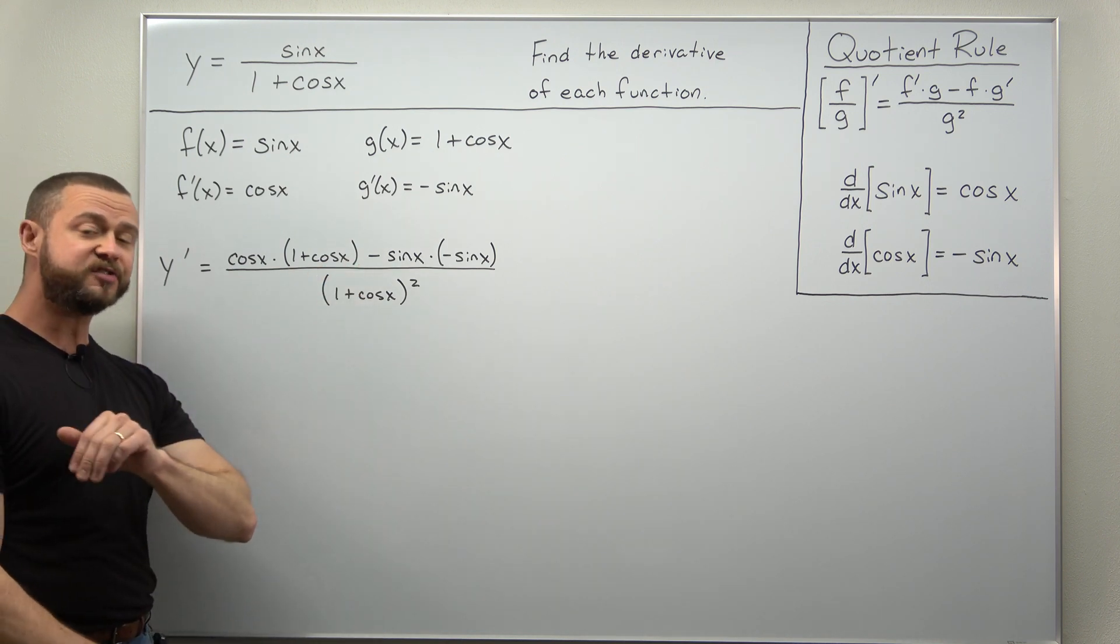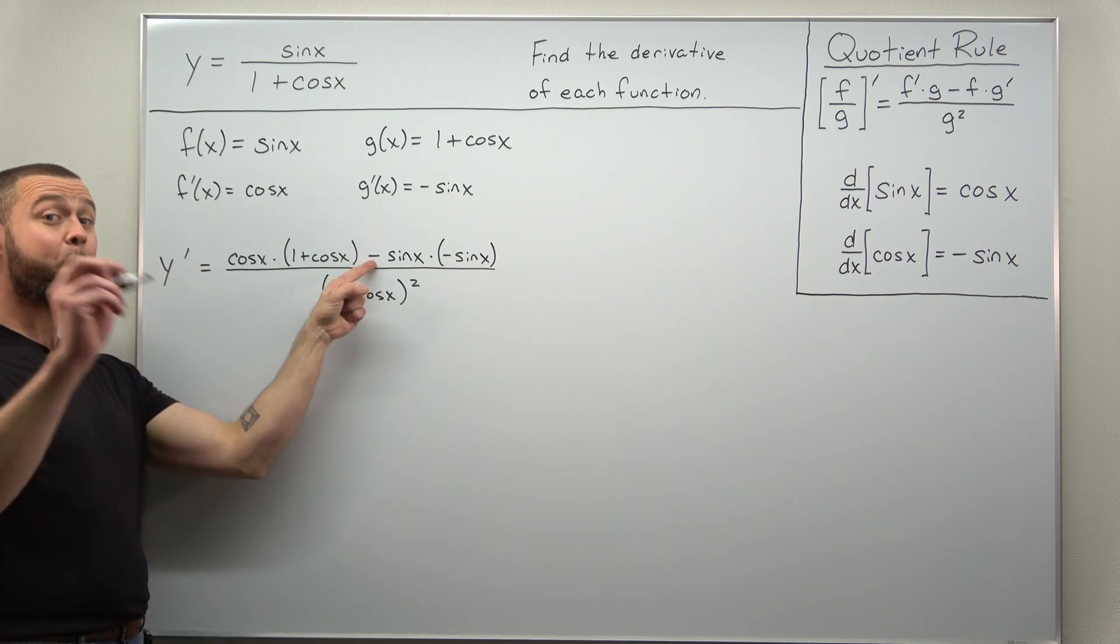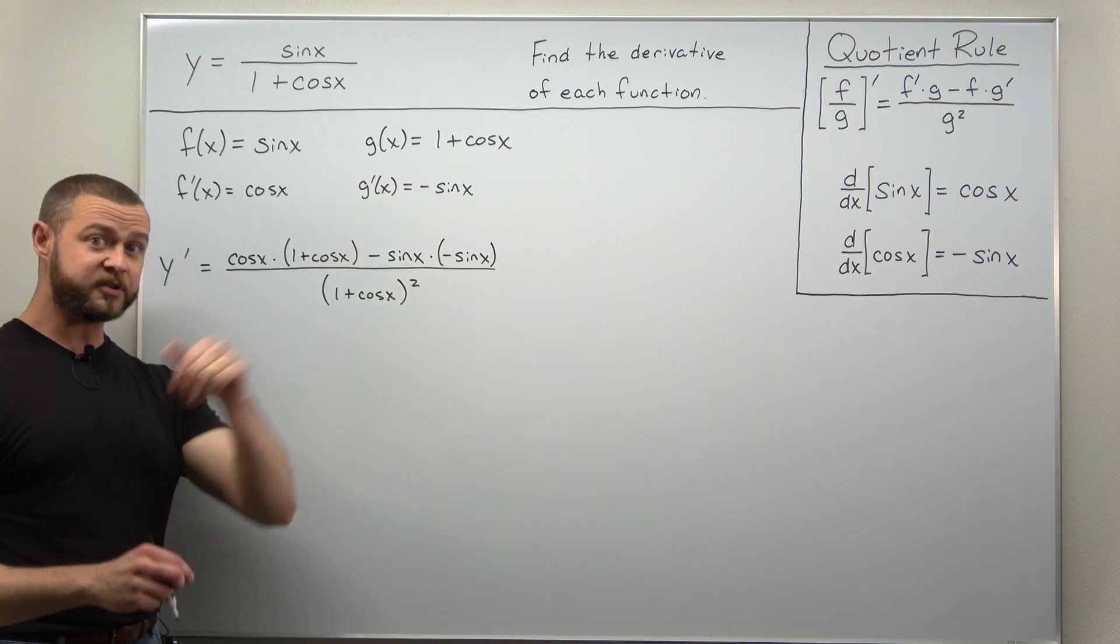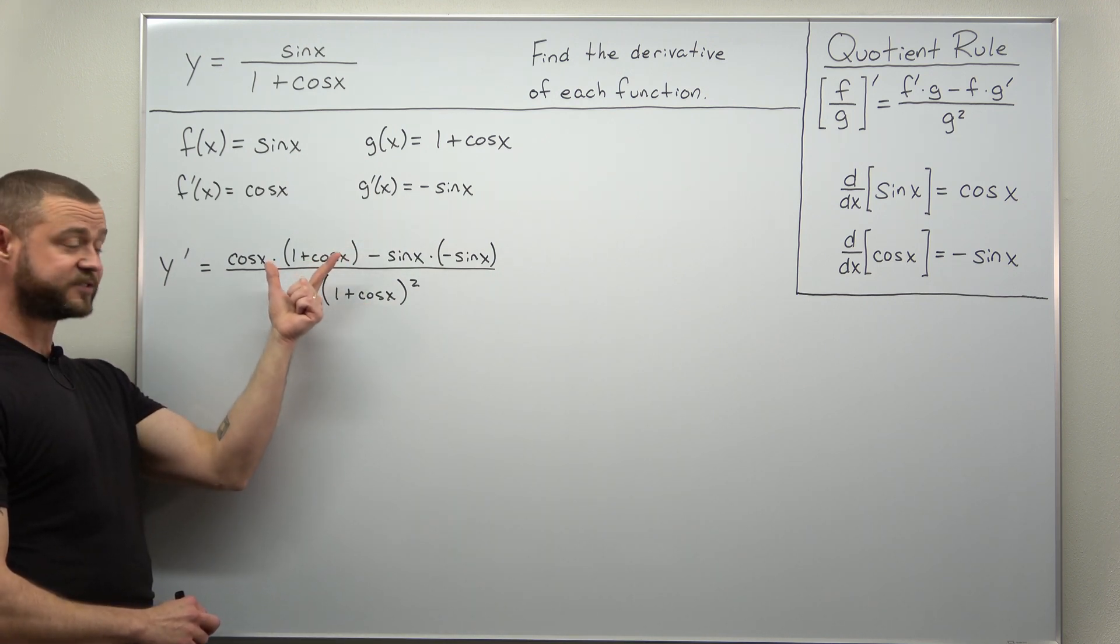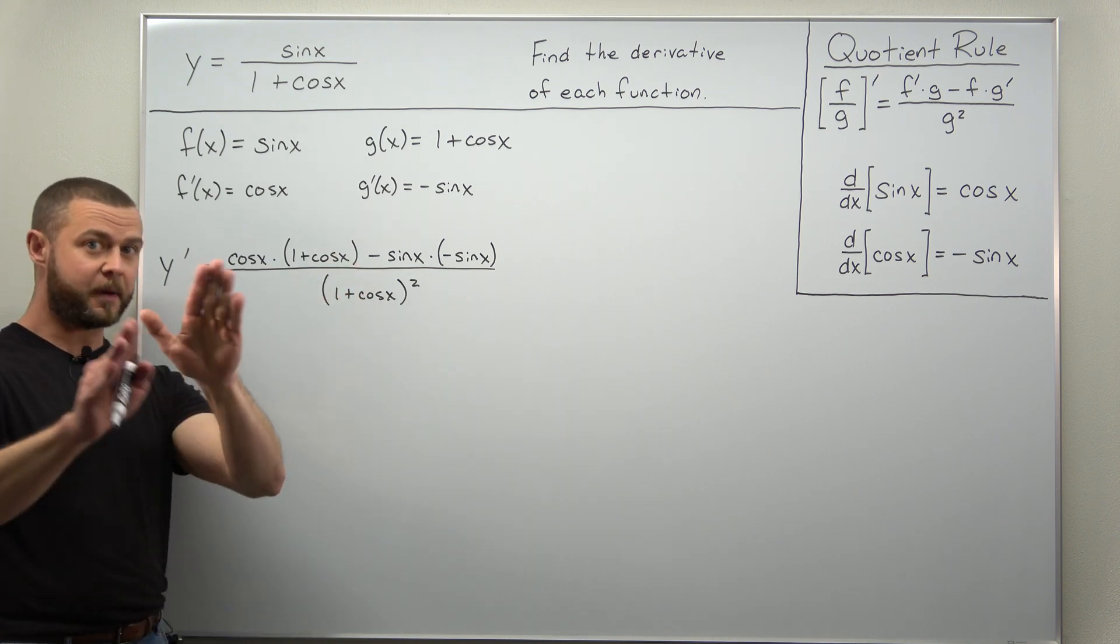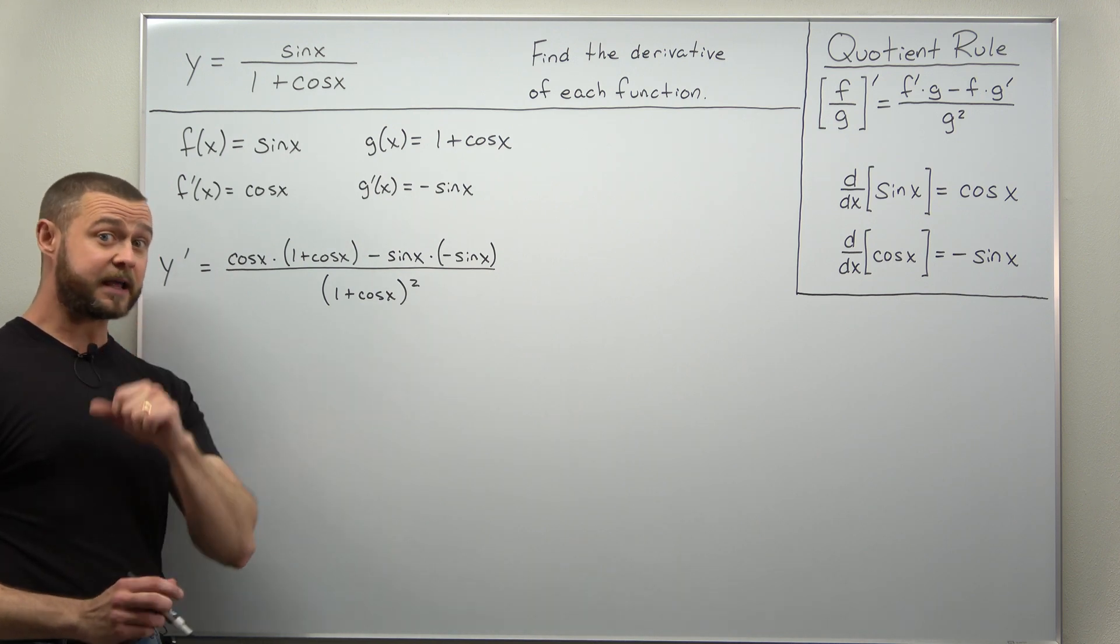If that minus sign were multiplication then that whole numerator would have a bunch of factors and then you could cancel 1 plus cosine of x out with a factor in the denominator. So here the minus prevents that. Very common mistake that I see in my calculus 1 course.